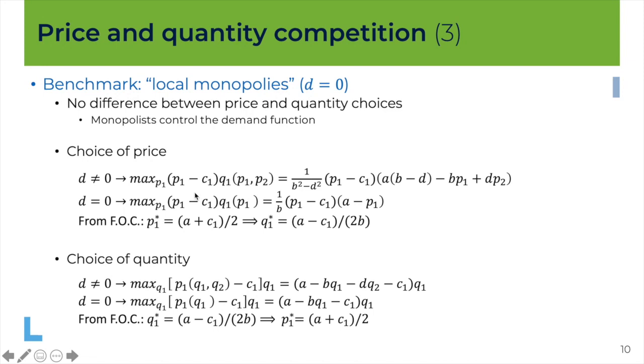So this is what we wrote on the previous slide when d is different from zero. If you set d is equal to zero in this expression this is what you get. Firm one is choosing its price p1 to maximize this function here. 1 over b times p1 minus c1 times a minus p1. I'll let you check that the optimal price when you solve the first order condition is a plus c1 over 2 and if you replace this in the demand function which is 1 over b a minus p1 you should find q1 star is equal to a minus c1 divided by 2 times b.